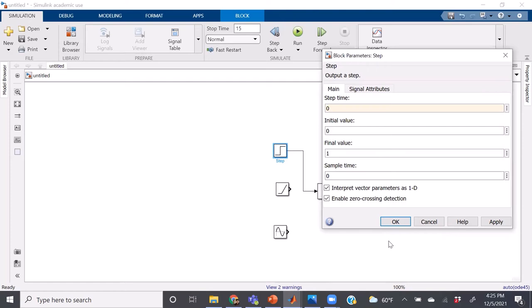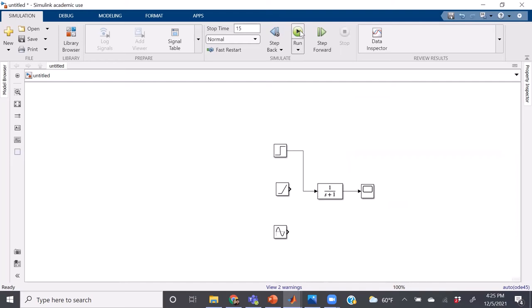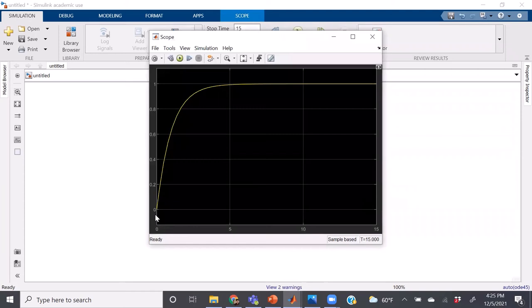Now that everything is set up the way we want to, all we have to do is hit run, and then double click on the scope to see our process response to that step change.